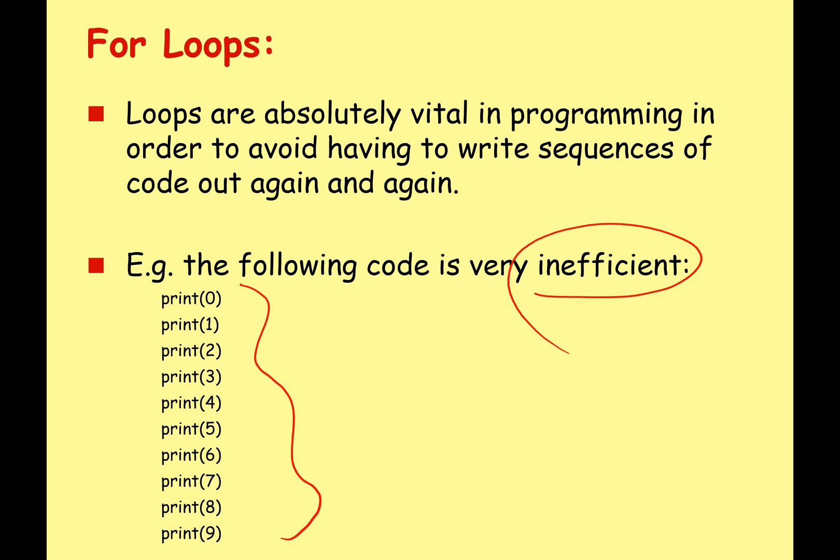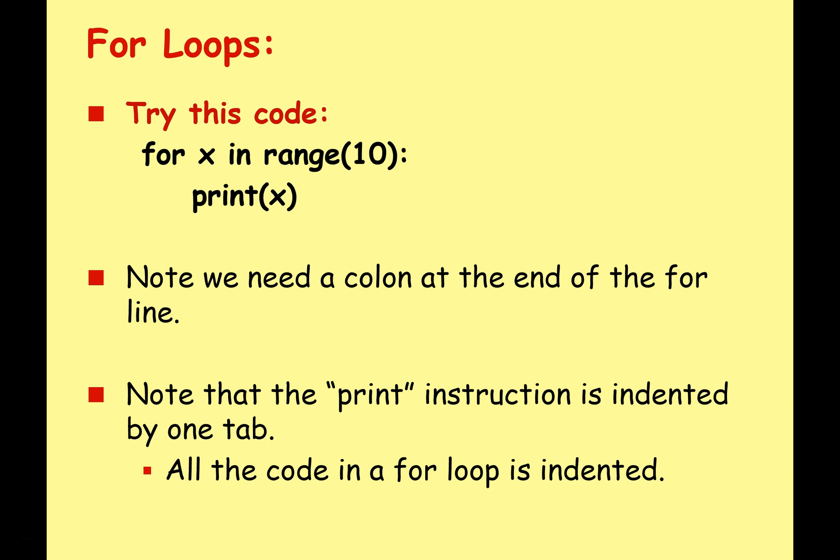We want the computer to do the hard work for us. So how do we do that in Python? Well, we're going to use a for loop, and it looks something like this: for x in range 10 colon print x. This will do the same thing as the code in the previous slide - it'll print 0, 1, 2, 3 all the way to 9.